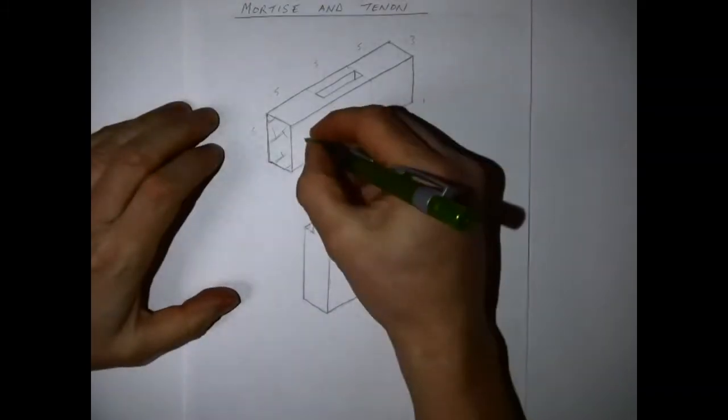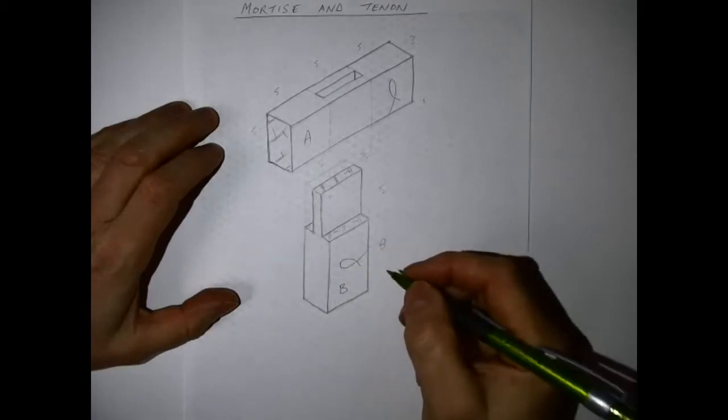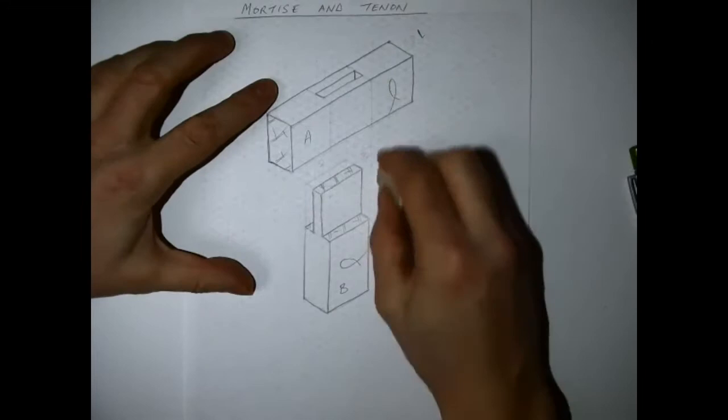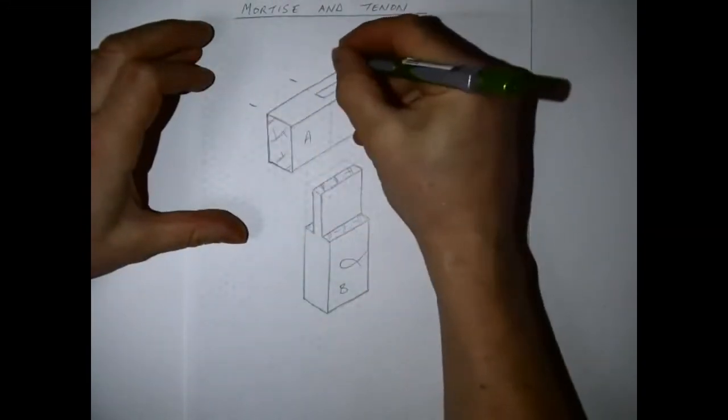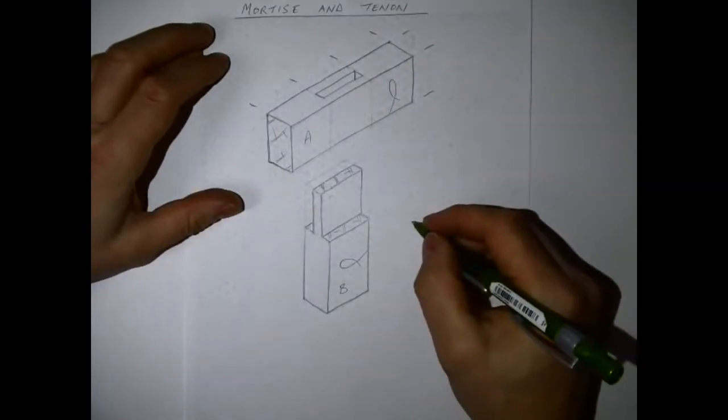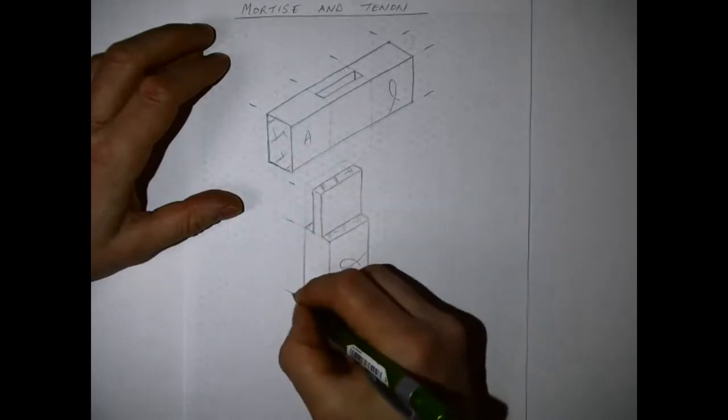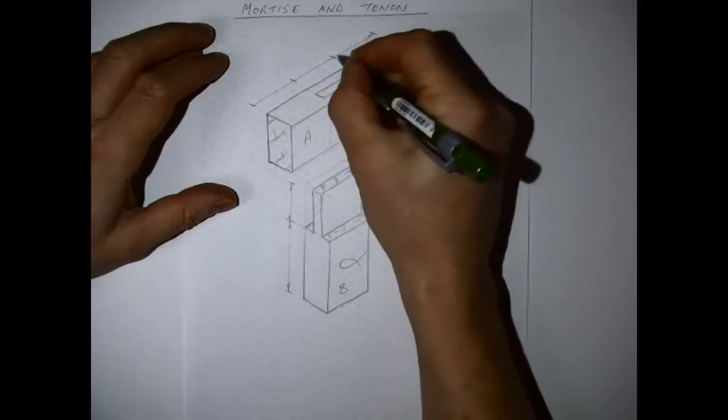And I can put in my piece A and B and my face side and face edge, or in this case it's only the face side, and I can put in my dimensions now which we'll need to make the piece. So along the top here I'm coming two squares away so it doesn't clutter the actual drawing and the same too at the tenon.